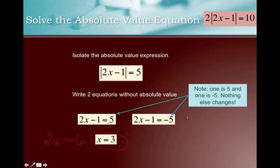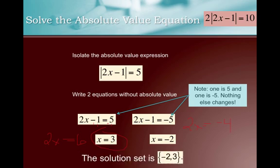All right, over here on the negative side, I'm going to add 1 to both sides, giving me 2x equals negative 4. I'll divide both sides by 2, getting x equals negative 2. And so, my solution set is both negative 2 and 3.